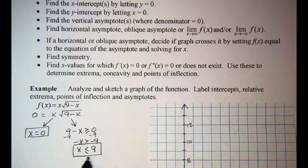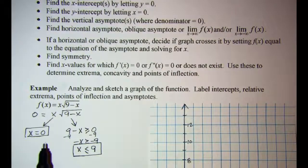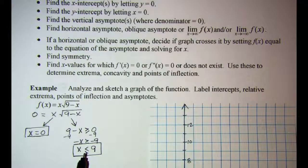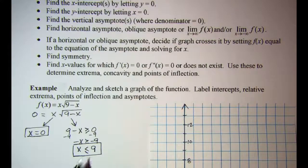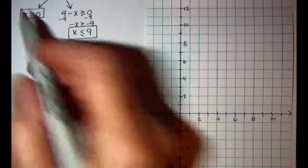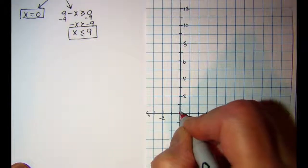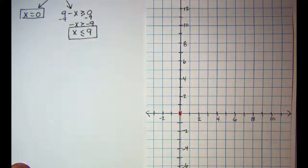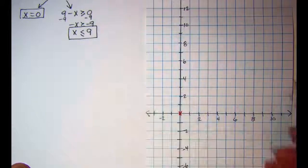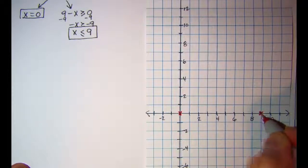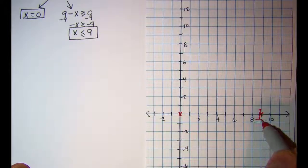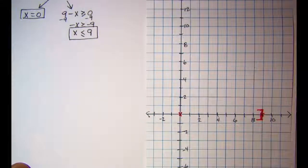So 9 will be the 0 and then the domain is restricted to all numbers that are less than 9. Let's enter this information on our graph. x equals 0 is one of the zeros of our function, and x has to be less than or equal to 9. So 9 is a 0 and then this is our domain, numbers that are less than 9.